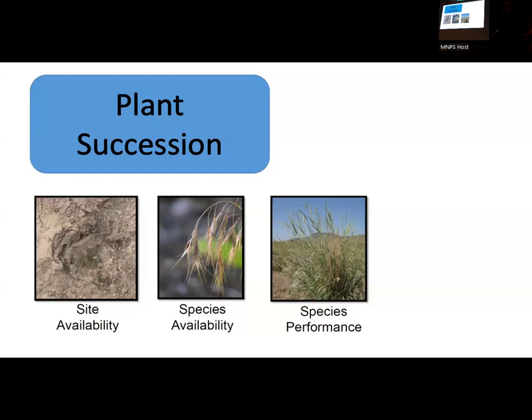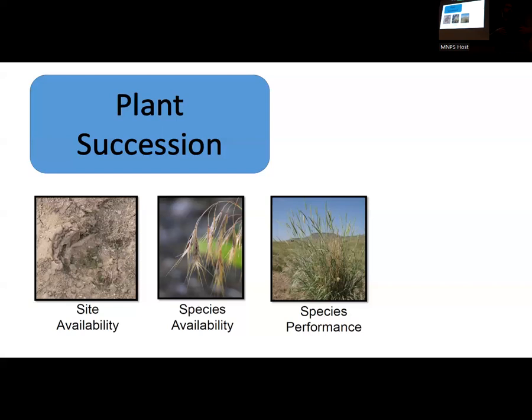A lot of our tools that we think about in traditional weed control are really going to influence the species availability. But you also have to be very considerate of the non-specificity of a lot of our tools to impact the species availability of the species you want — the beneficial species that might already be there.